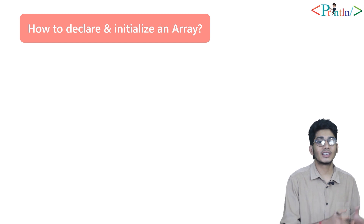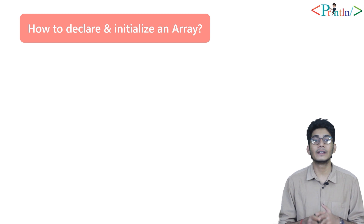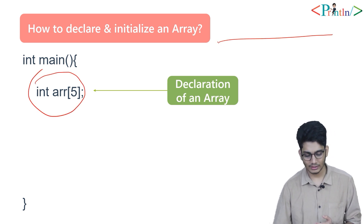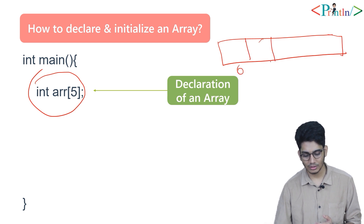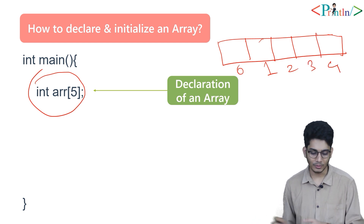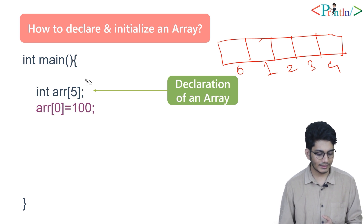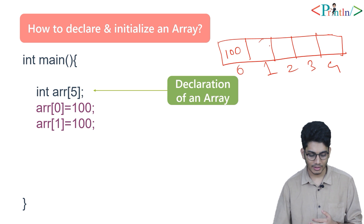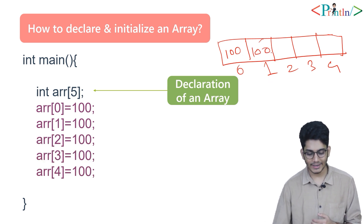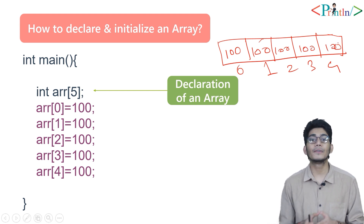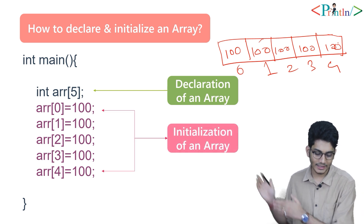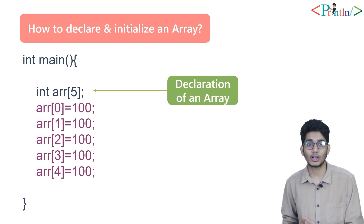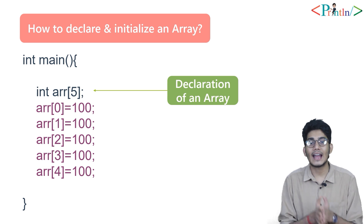Now let's talk about how to declare and initialize explicitly — separately. First we write the main function, then declare the array. The blocks go 0, 1, 2, 3, 4. When I write 'arr[0] = 100', the value 100 goes into the first block. Then 'arr[1] = 100' for the second block, and so on — 100, 100, 100 for the remaining indexes. That's how you declare an array first and then initialize it explicitly.